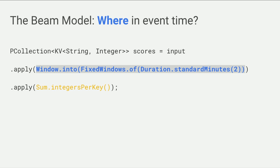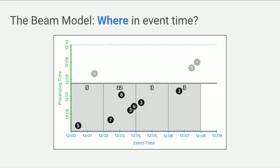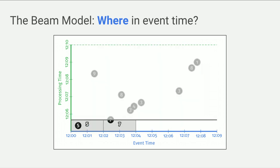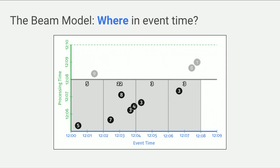Now we'll start building towards a streaming system. The first step is answering the second question of the Beam model: where in event time? If we're building a real-time system, we can't sum up forever — we have to produce results over some period of time. So we divide event time into windows. We answer this with a second line of code, specifying that the input collection is divided into fixed windows of, for example, two-minute duration. Instead of getting one result of 51, we get four results: 14, 22, 3, and 12 for these two-minute chunks of event time.